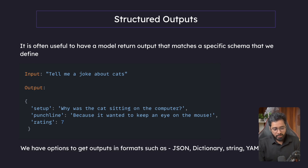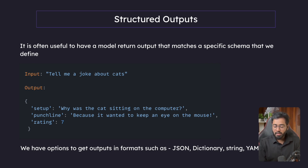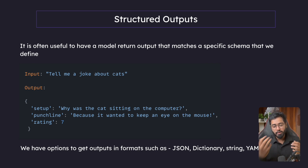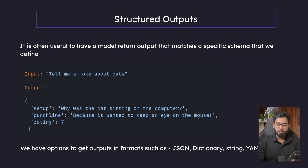We also have options to get outputs in formats such as JSON, dictionary, string, YAML, HTML — there are a bunch of different formats that we can actually force the LLM to provide content in. That is what we are going to be learning how to do in this particular section, because this is an important thing we have to understand so that we can easily learn the reflexion agent architecture pattern.